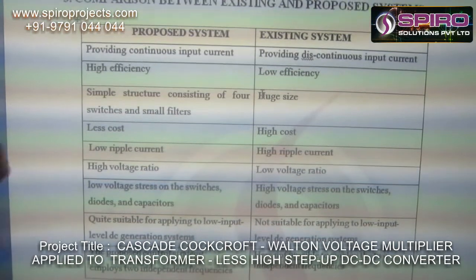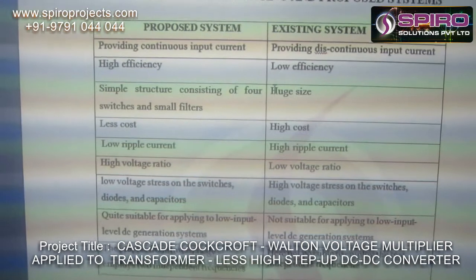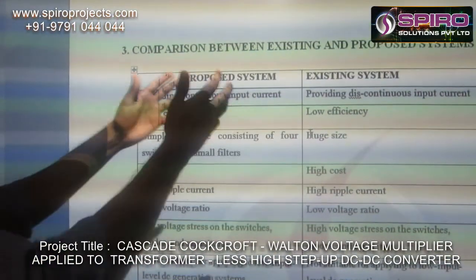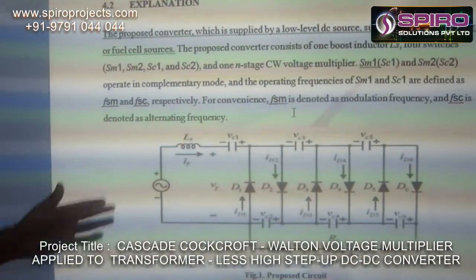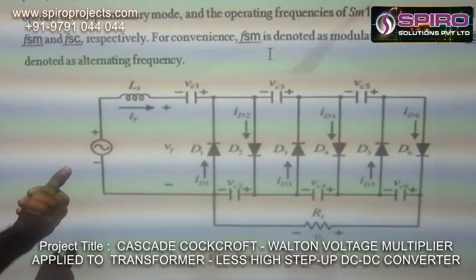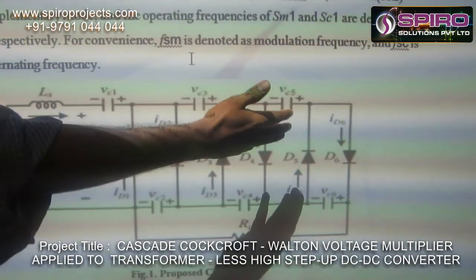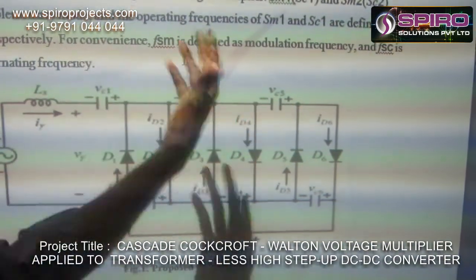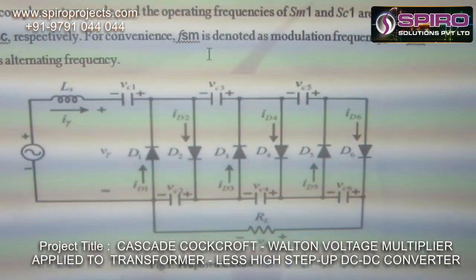Our proposed system has a high voltage ratio and is quite stable for applying to a low input level DC generation system. Comparing all existing systems, our proposed system has many advantages. Here is the circuit diagram of our proposed system. It takes input from the AC mains, and this AC input is given to our proposed system. The AC input voltage is stepped up or stepped down using our proposed system without using any transformers.